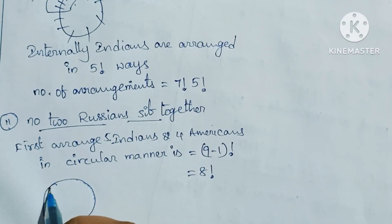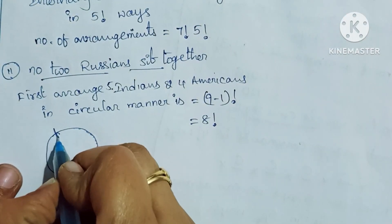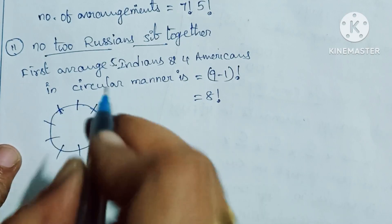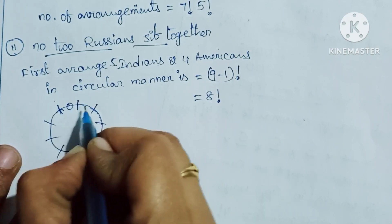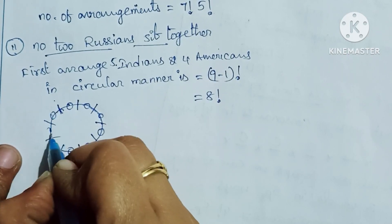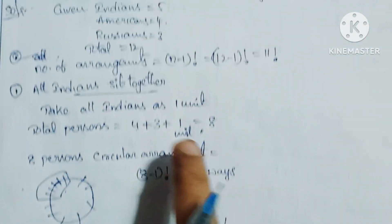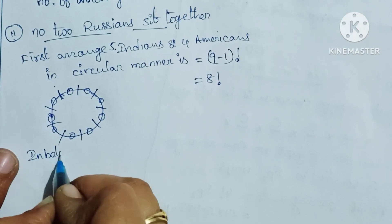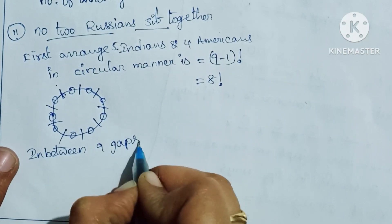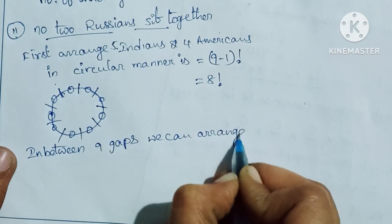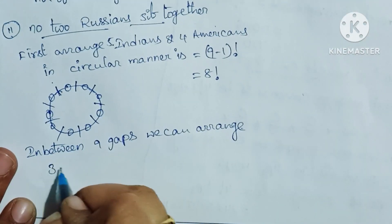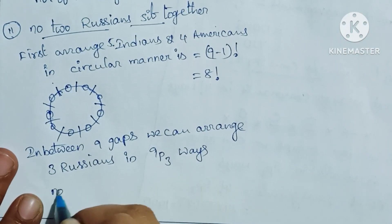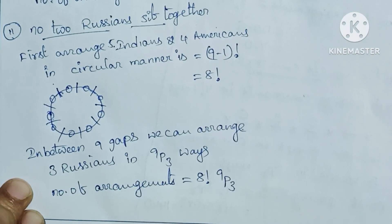With 9 members seated, there are 9 gaps between them. We arrange the 3 Russians in these 9 gaps so that no two Russians sit together. The number of ways to place 3 Russians in 9 gaps is 9P3. So number of arrangements = 8! × 9P3.